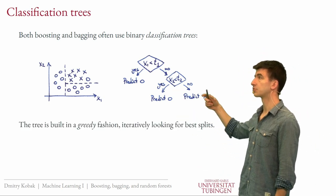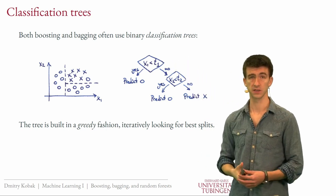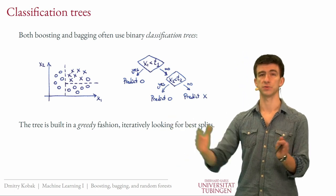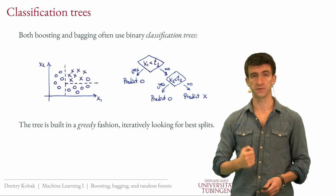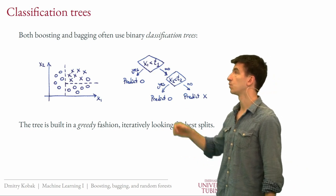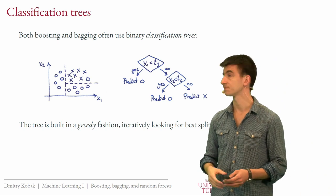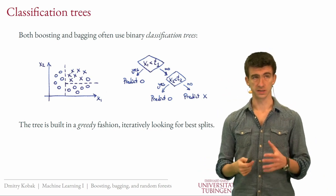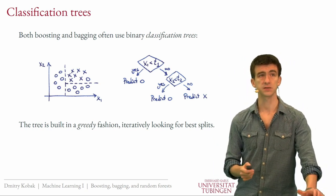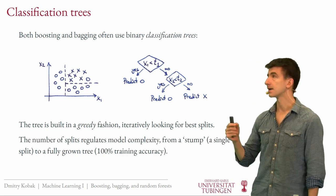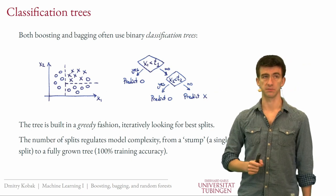The tree is built in a greedy manner. We first look for the best possible split by scanning each feature and checking possible thresholds to find what is best. Since you're always looking at one feature at a time, that's not very costly. Once you've found the split, you proceed to the next level and look for the second best split and so on. The size of the tree regulates model complexity in this case.